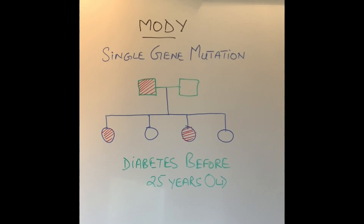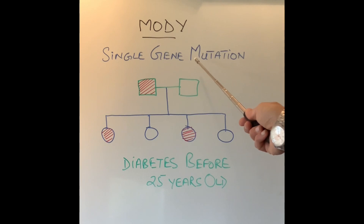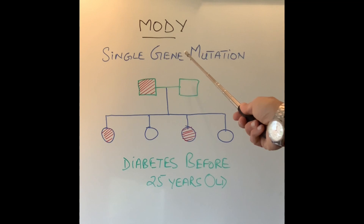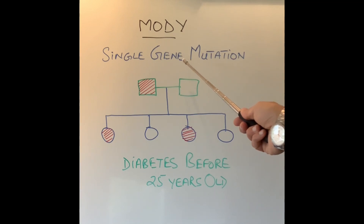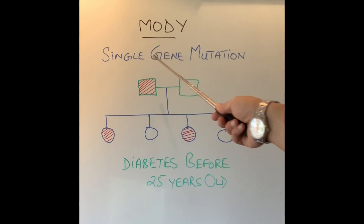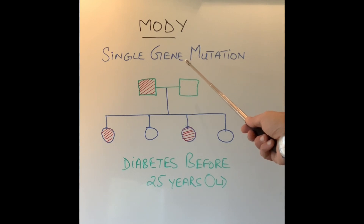But what causes this gene mutation? First, to understand what genes are — genes are the little things in our cells which control everything in our body: our hair color, our skin color, how our body works, how our body develops, how tall we are going to be. Everything is controlled by genes. There are a few genes which control the production of insulin from the pancreas, and if those genes are not working properly, the pancreas will not produce enough insulin.